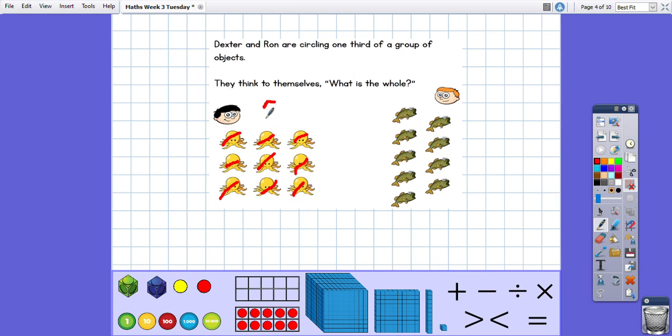And let's see about Ron and his fish. So let's count. One, two, three, four, five, six, seven, eight, nine. So Dexter has also got nine. So the whole for them is nine.